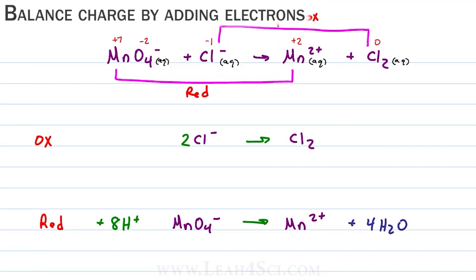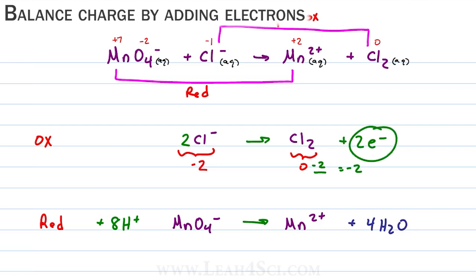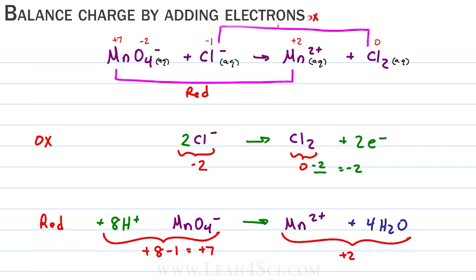Next we balance the H's: none in the reactants but eight in the products from 4 H2O. We add eight H+ on the reactant side, and the reduction half is balanced: eight hydrogen, eight hydrogen; one manganese, one manganese; four oxygen, four oxygen. Let's move on to charge. For the oxidation half reaction: two times negative one is negative two in the reactants and zero in the products. Zero minus two equals negative two, so we add two electrons to the products. For the reduction half: plus eight minus one equals plus seven on the reactants and plus two on the products. Seven minus five equals two, so we add five electrons to the reactant side.